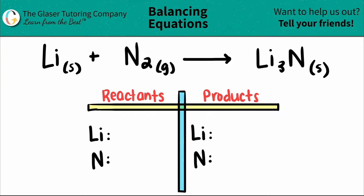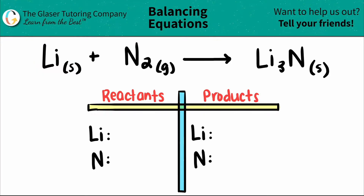I already wrote out our chart here with the elements I see on both sides of the equation. All we have to do now is write out the numbers. I just see a lonely lithium here — there's no coefficient, there's no subscript, so I have one. And then for the nitrogen, I see that I have two nitrogens, so I'm going to put a two here.